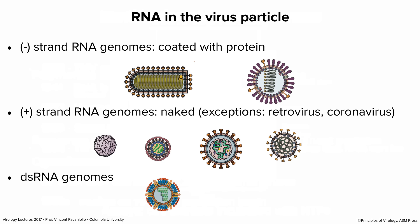Plus-strand RNA genomes — poliovirus, flaviviruses — the RNA is naked in the particle, because nothing else is needed to initiate an infection. The viral RNA is infectious because it's plus-stranded; as soon as it gets into the cell it's translated. It's ribosome-ready, and all proteins including the RNA polymerase are then made. There are exceptions: retroviruses have RNA that is reverse transcribed so it's not naked, and coronaviruses are plus-stranded but their RNA is coated with protein, possibly to protect their very long genomes.